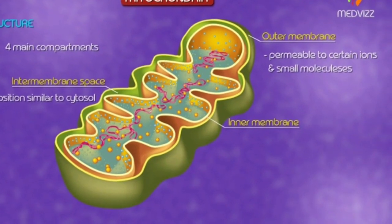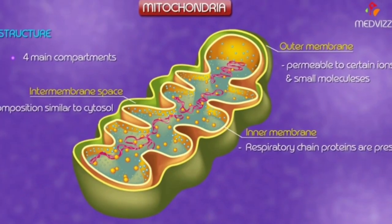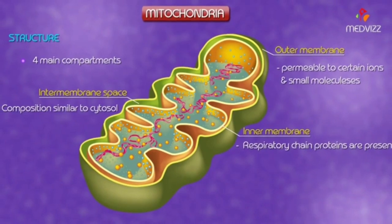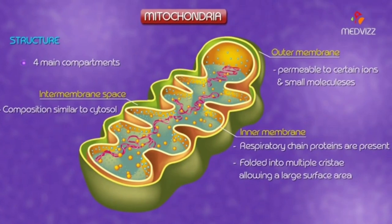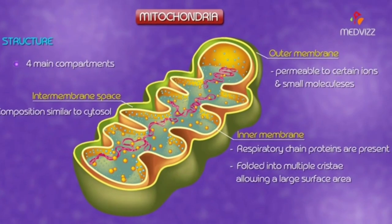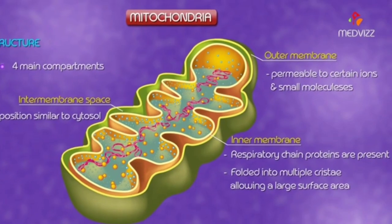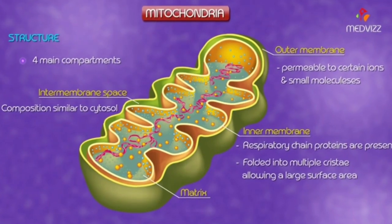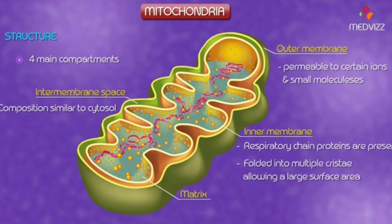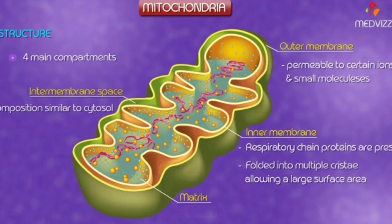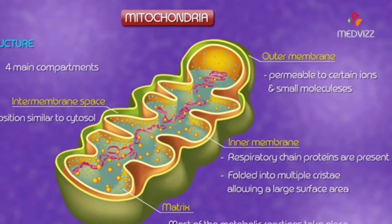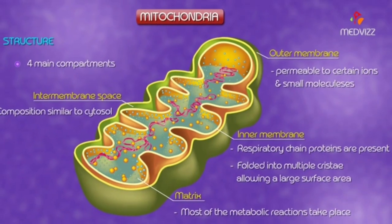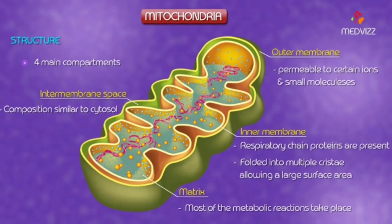Third, the inner membrane, where respiratory chain proteins are present. The inner membrane is folded into multiple cristae, allowing a large surface area. Fourth, the matrix, which is the inner part of the mitochondria where most of the metabolic reactions take place.